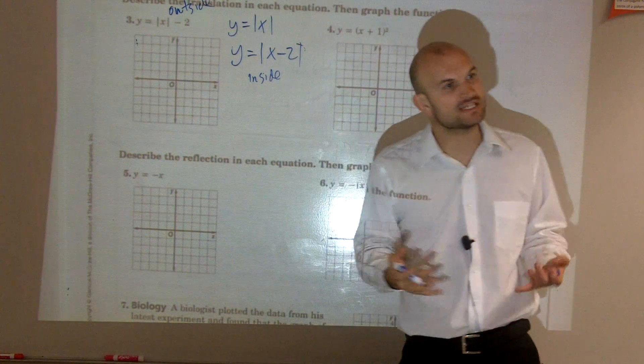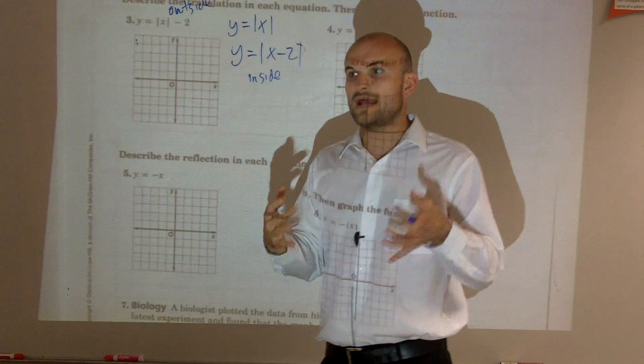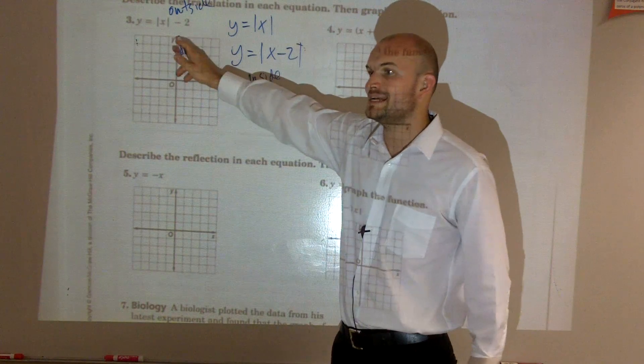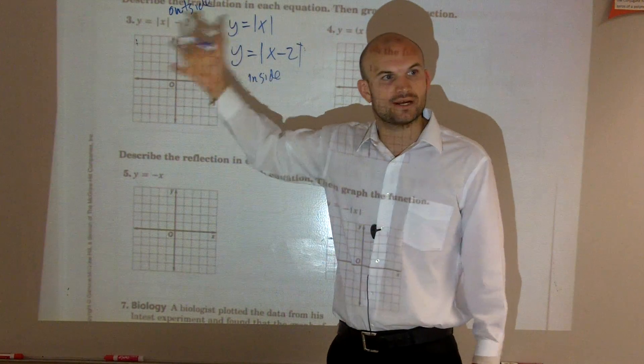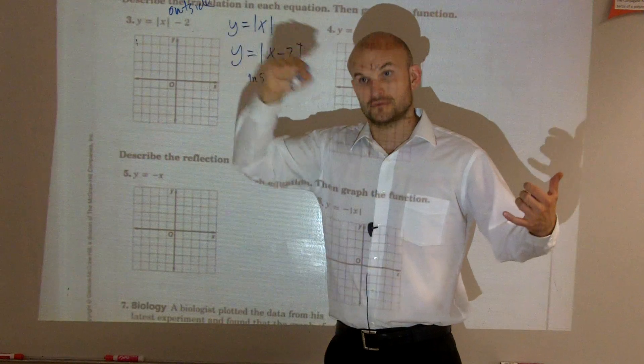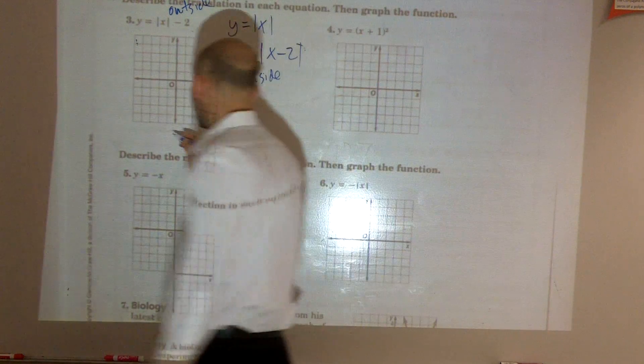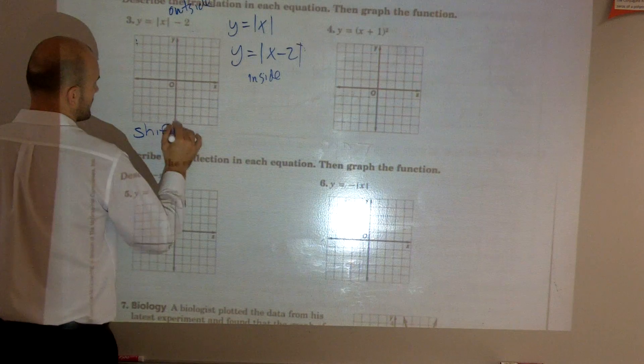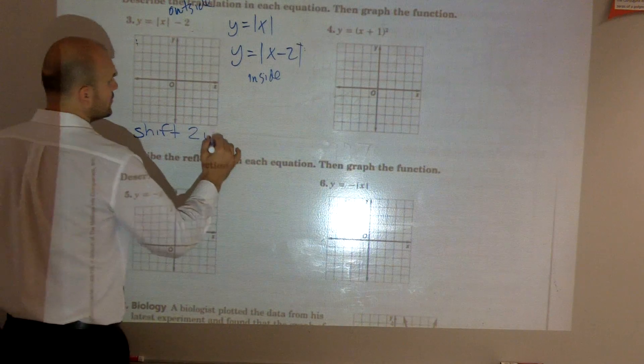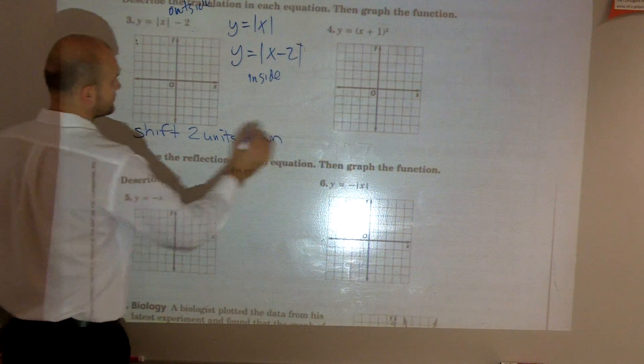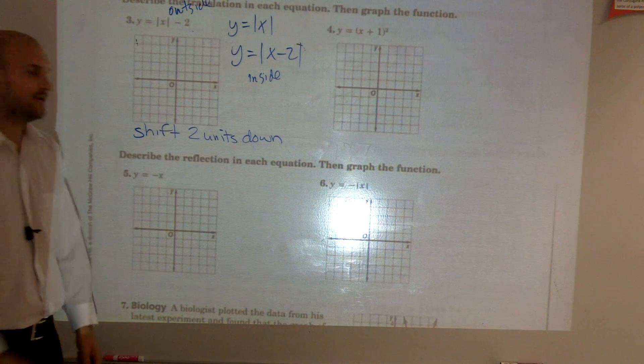So by using your transformation notes, which you should have done and written, what happened when you had a minus a transformation on the outside? What did it tell you to do? Goes down 2. So all you guys had to write here was shift 2 units down, OK?